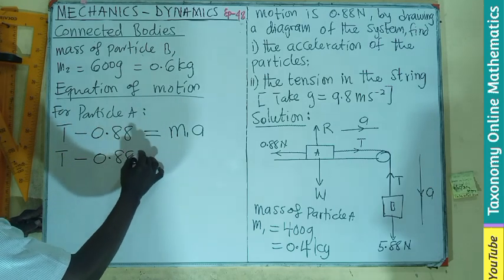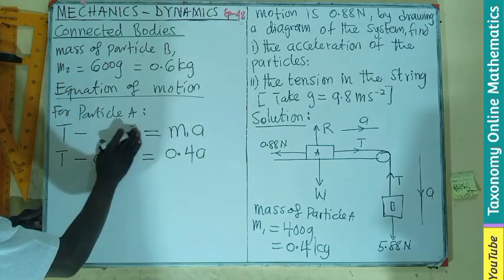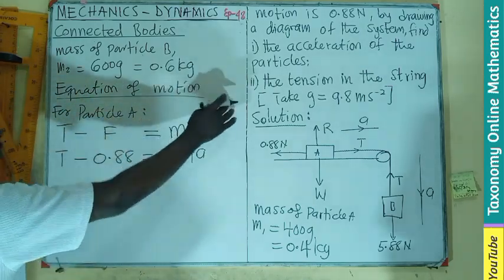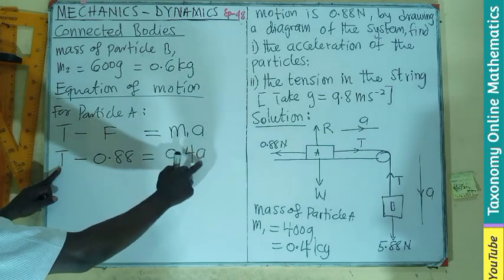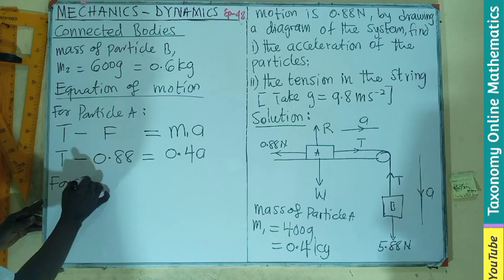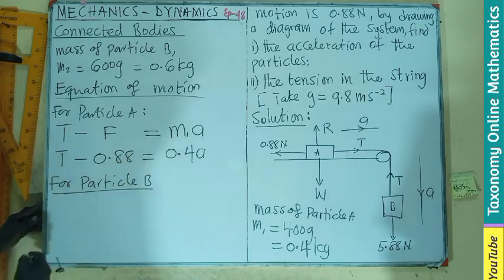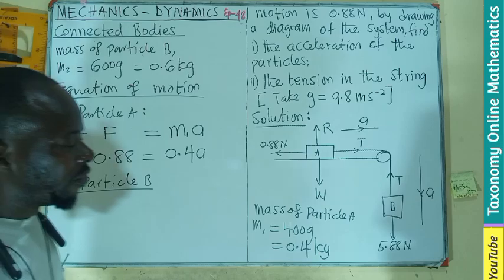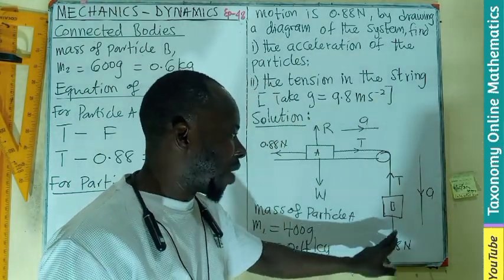Tension minus 0.88 equals to the mass times the acceleration. This mass we have as 0.4. So I have T minus 0.88 equals 0.4A. This is friction.